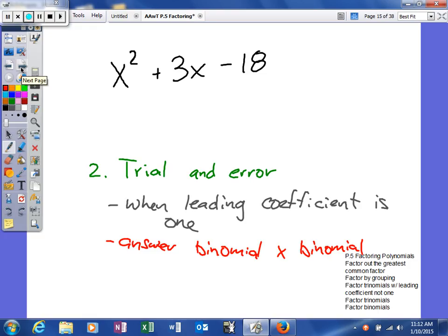So here you go, you can see the same original problem, and now we're going to use a method called trial and error. We can factor trinomials using trial and error, and I usually do this method when the leading coefficient is 1.